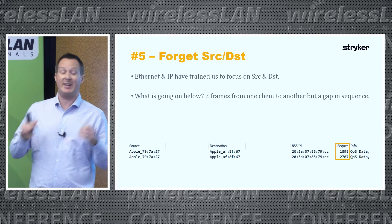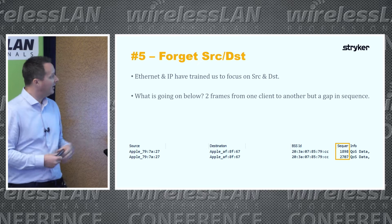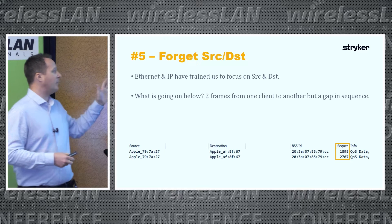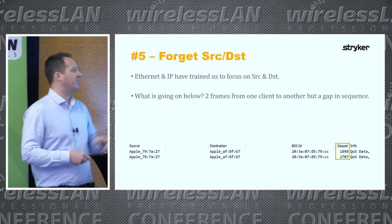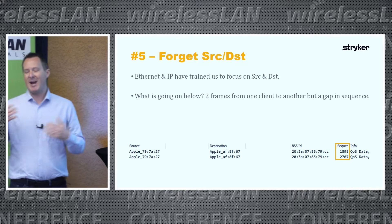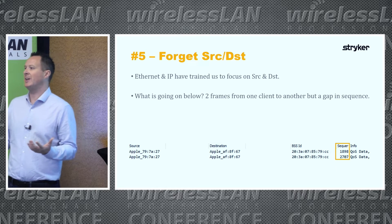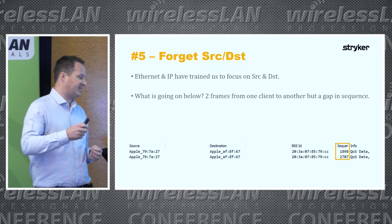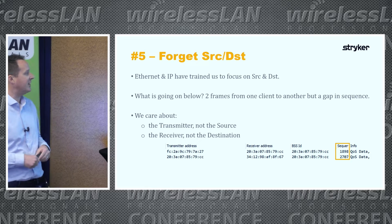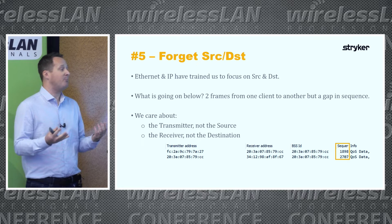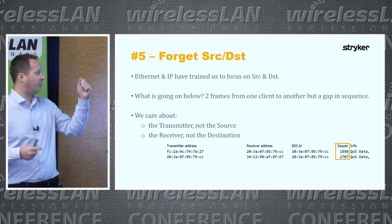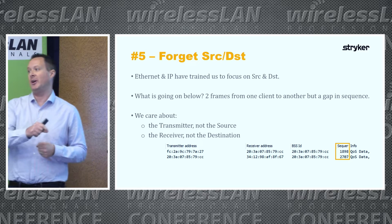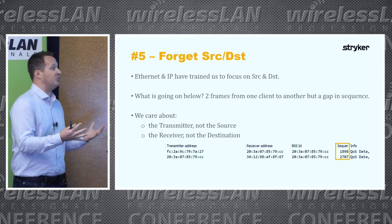Tip number five: forget about source and destination — they're the default columns in Wireshark but Wi-Fi has four addresses and those two are the least important. In this example it looks like one Apple client is transmitting to another Apple client via the same BSSID, but there's a massive jump in sequence numbers. If you hide source and destination and reveal the transmitter and receiver instead, you see it's actually two separate frames — one going up from an Apple device to the BSSID and one coming down from the BSSID to a different client. You're looking at two different segments of the network.